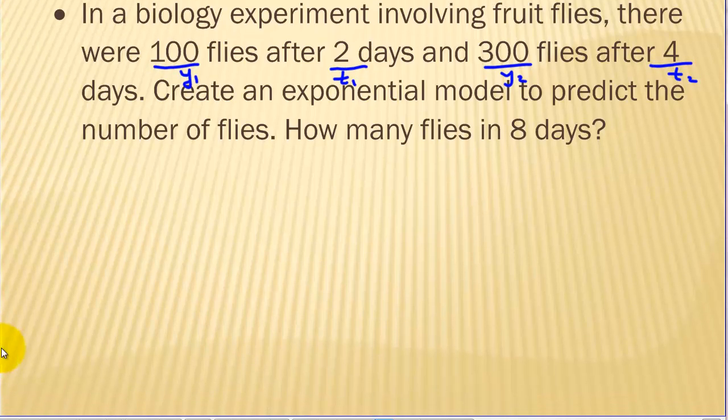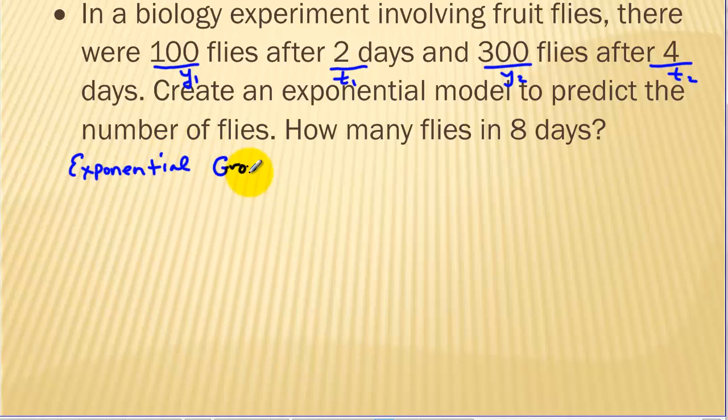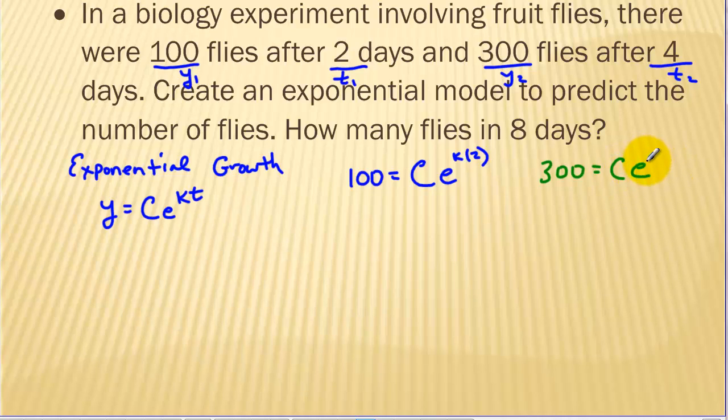We are assuming by knowing the way things work in biology that we want to use an exponential model, in this case exponential growth. In this model we have two unknowns, so we need two data points to find both letters. If we plug in our first data point we get 100 equals Ce to the k times 2. And the second equation: 300 equals Ce to the k times 4.